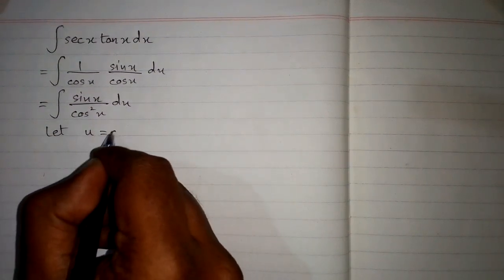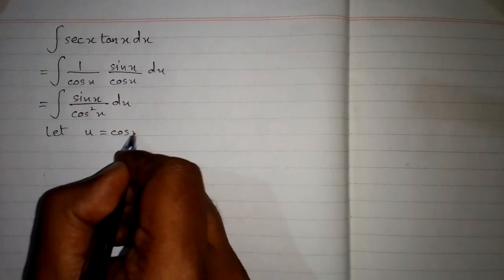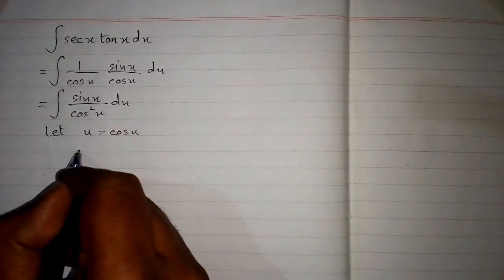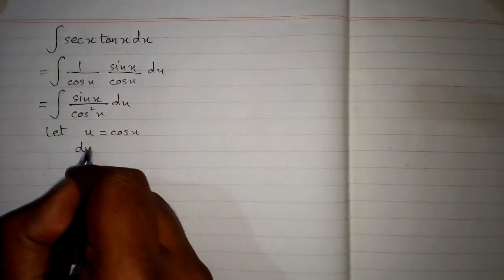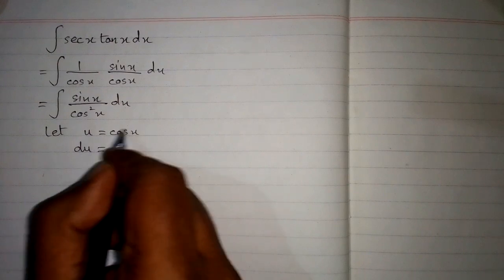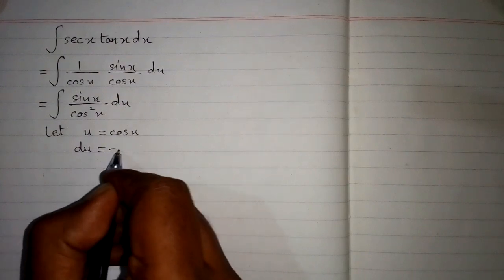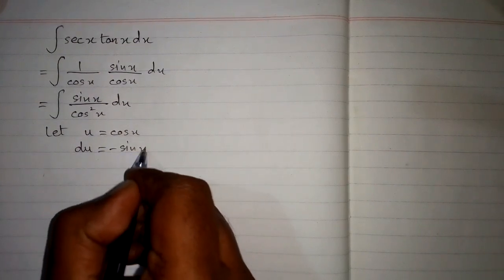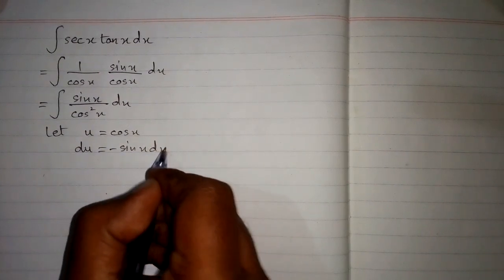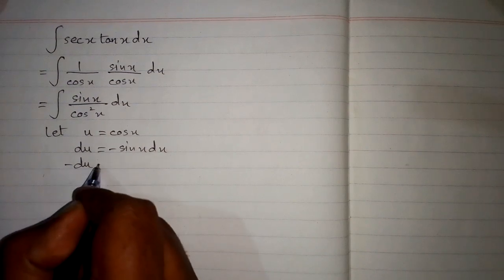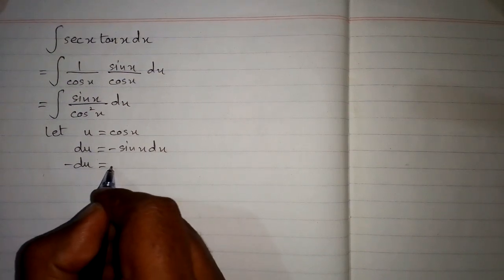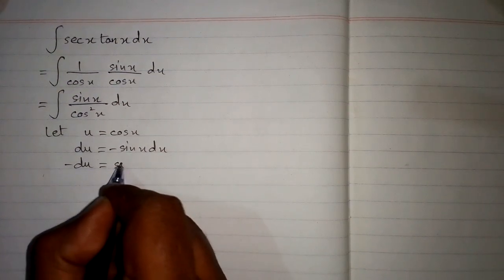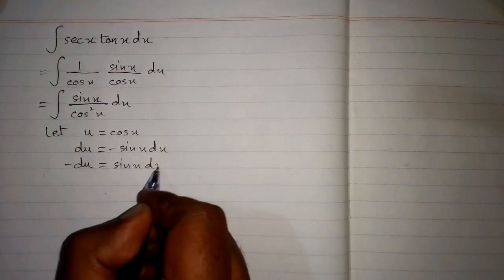Now we will suppose that cos x is equal to u. The differential du is equal to the derivative of cos x, which is minus sin x dx. This can be rewritten as minus du is equal to sin x dx.